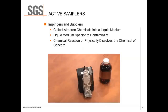Impingers and bubblers are used to collect airborne chemicals into a liquid medium — you're pulling the air sample through a liquid and the contaminant dissolves into that liquid medium. Water can be used, as well as other liquid mediums specific to the analyte you're looking for. These work by two mechanisms: a chemical reaction of the contaminant with the medium, or physical dissolution of the chemical concern. The liquid is then sent off to the laboratory for analysis.